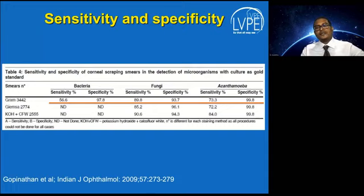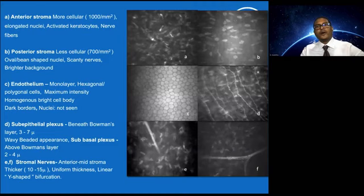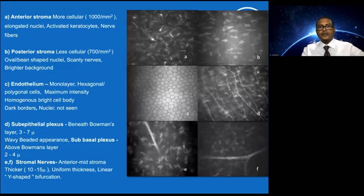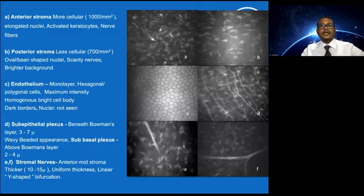Confocal microscopy is a major aid to corneal diagnostics. Based on the principle of a common focal point, confocal microscopy achieves resolution of 1 to 2 microns axially and 5 to 10 microns laterally, compared to the normal slit lamp resolution of up to 20 microns. This enables in-vivo detection of fungi, parasites, and other corneal pathologies at cellular level.